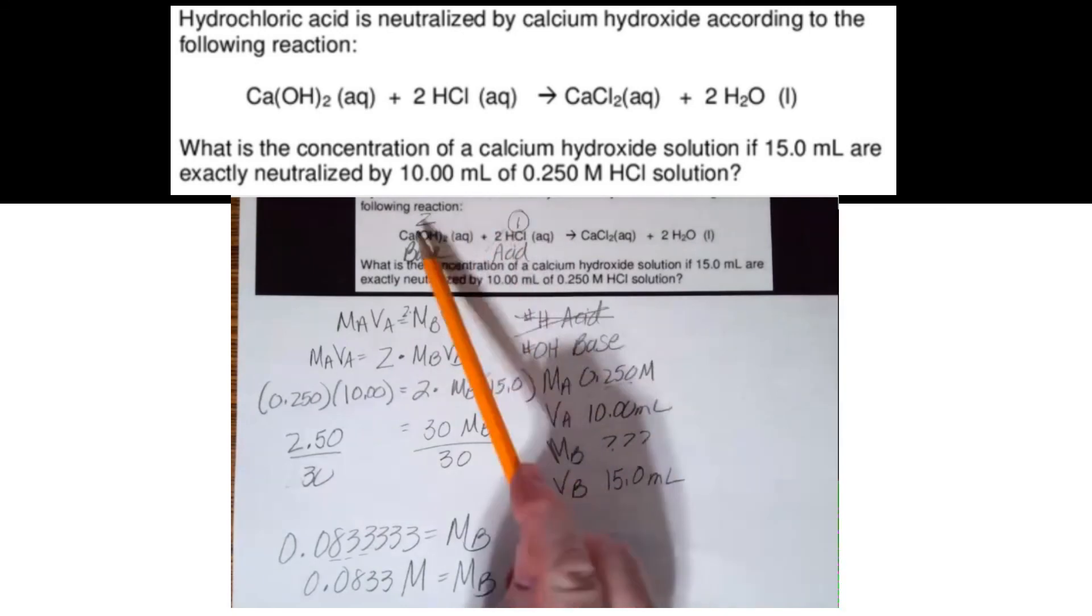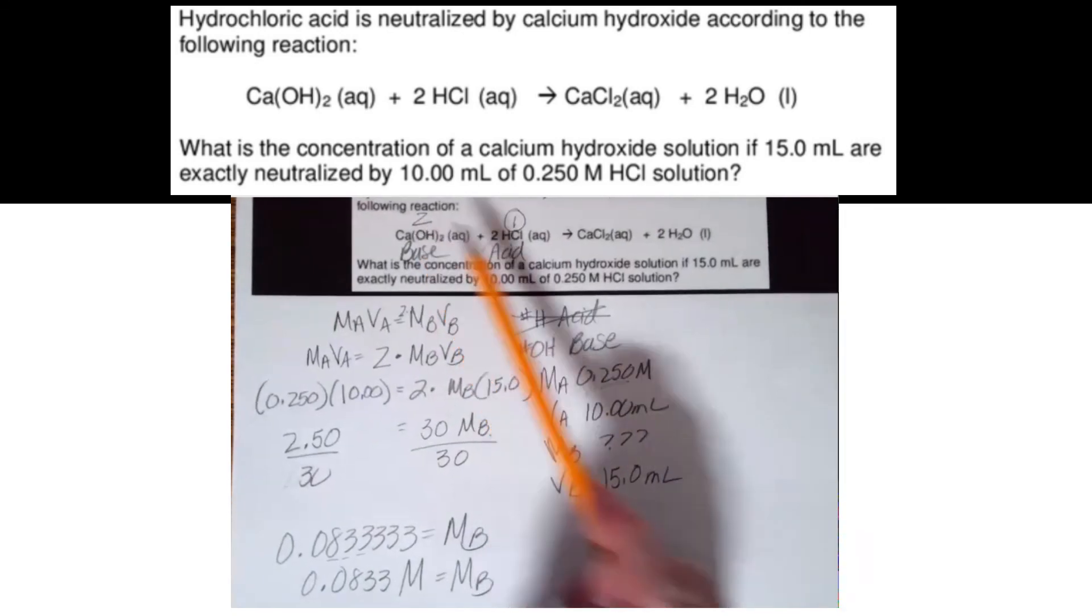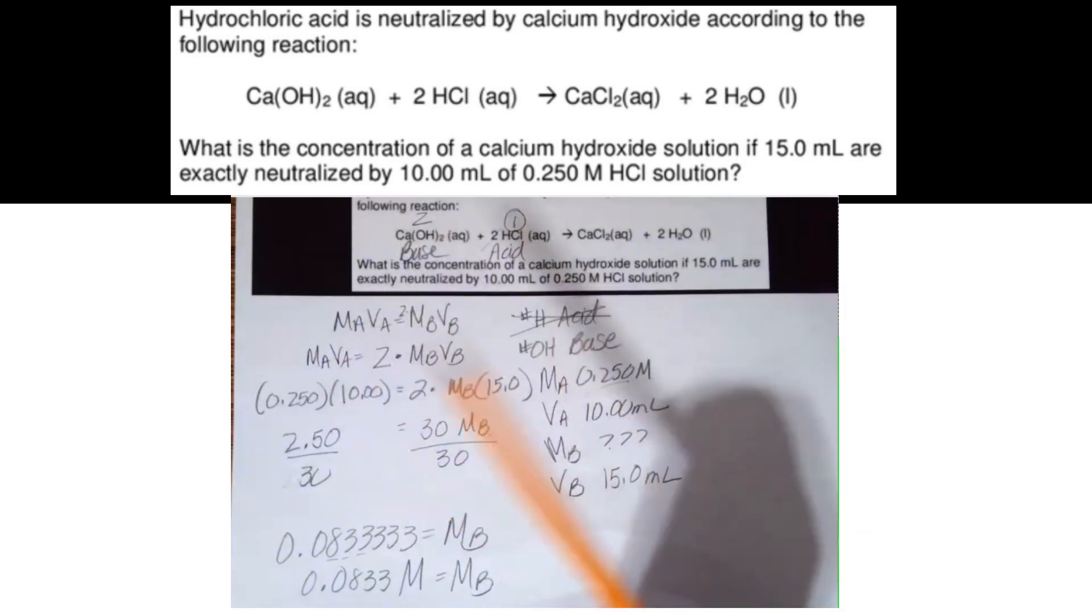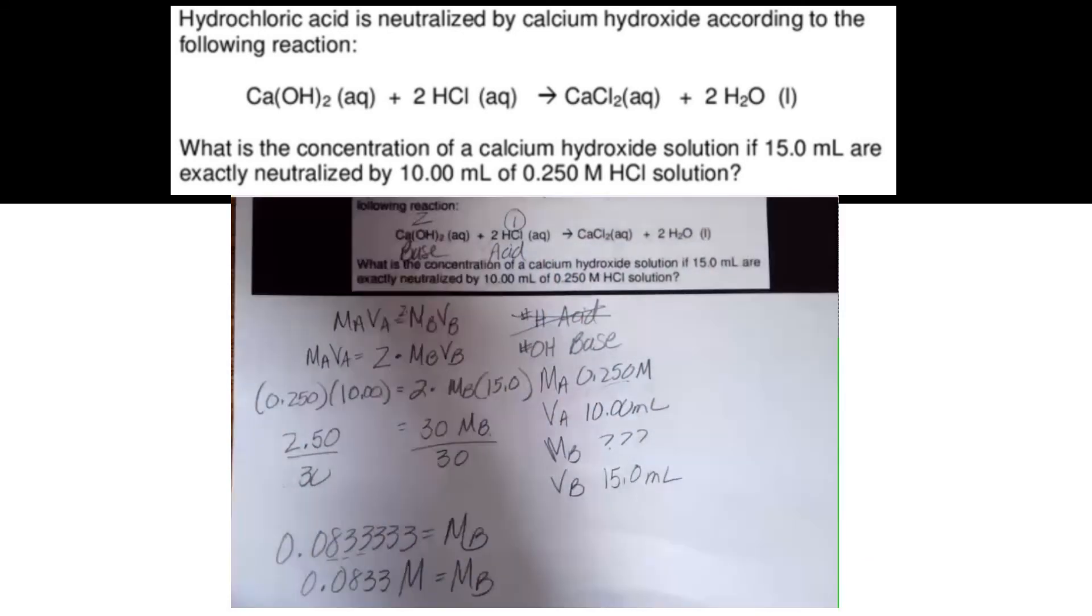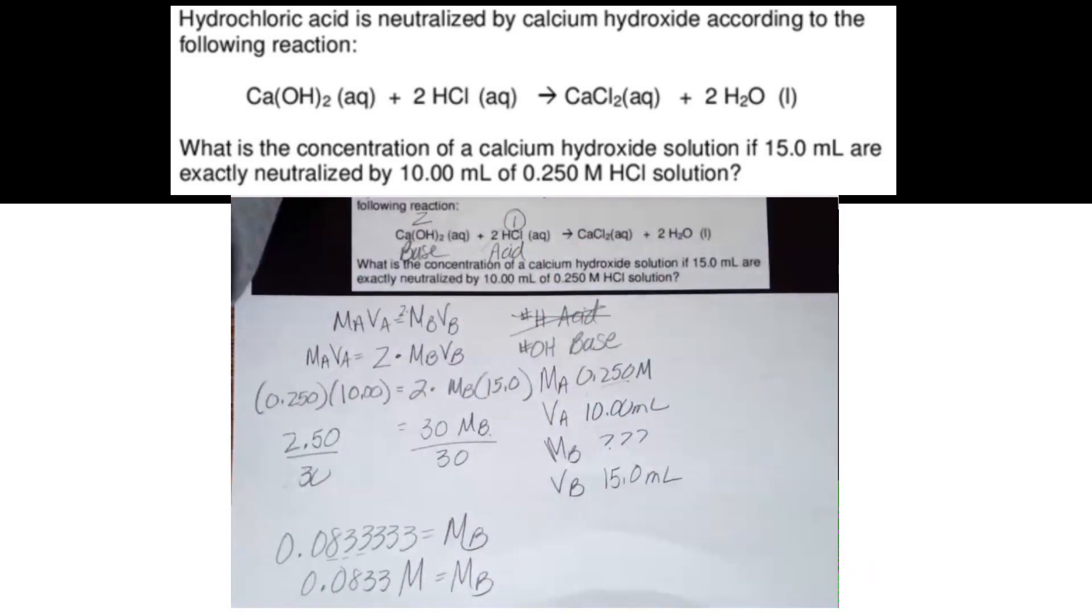That's how to be careful when the number of OHs in the formula is not one. Or the number of Hs like in the last problem is not one. Be careful. This is where you'll get tricked potentially. Hopefully not now though.